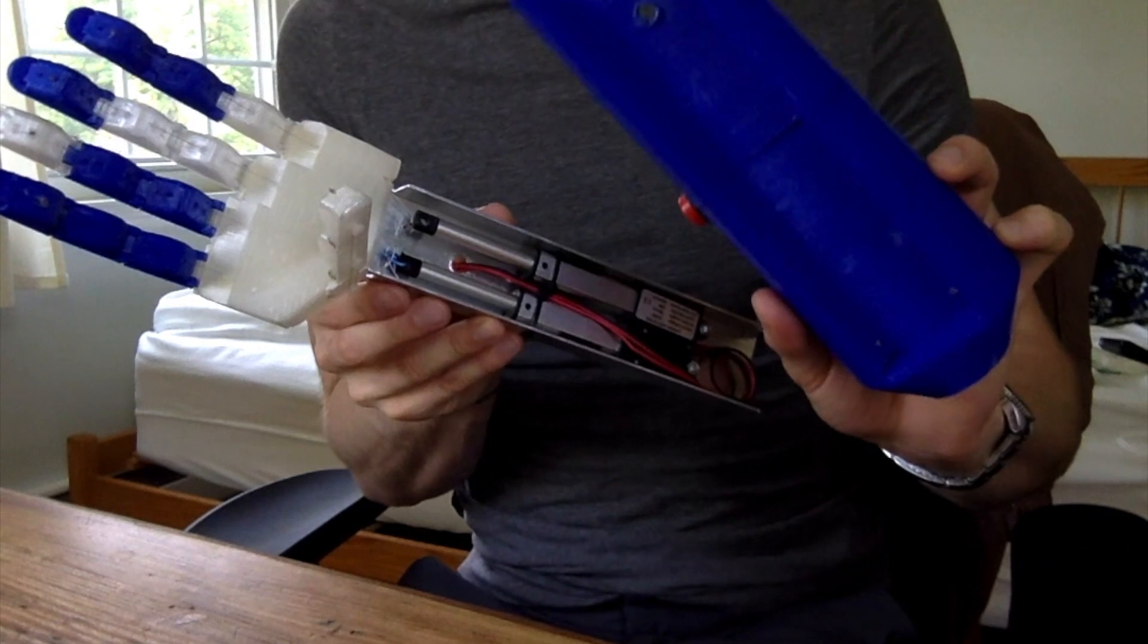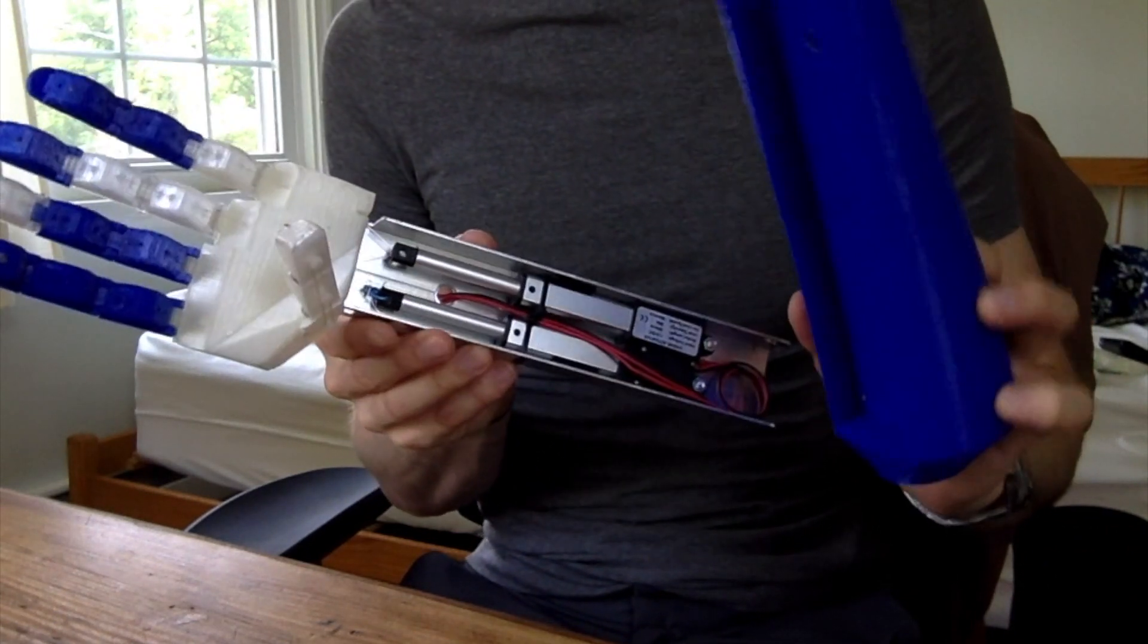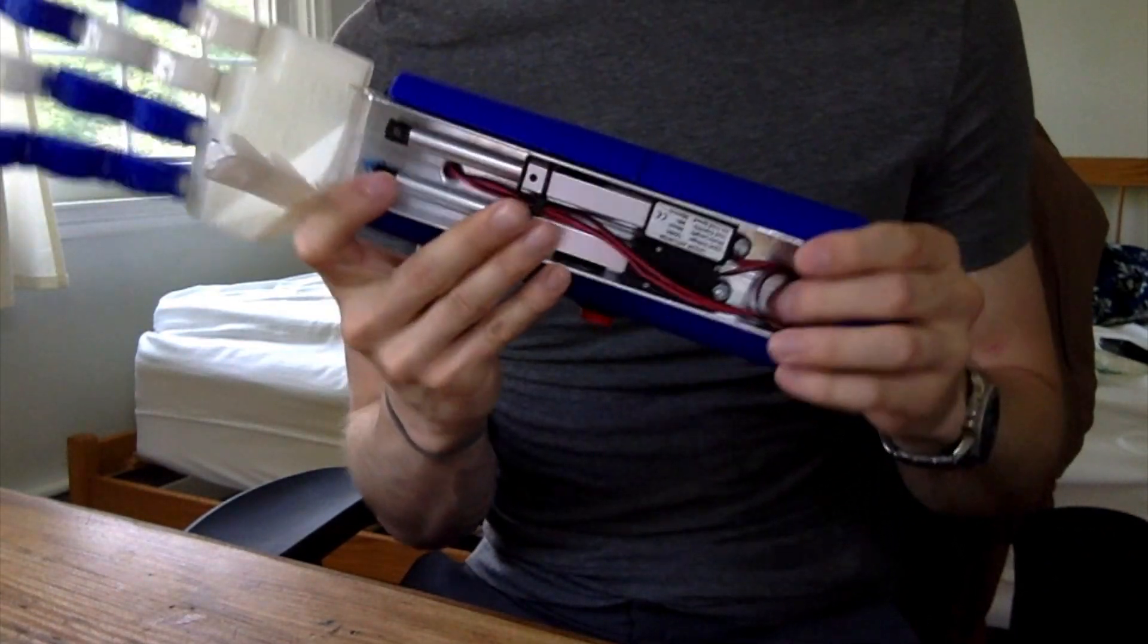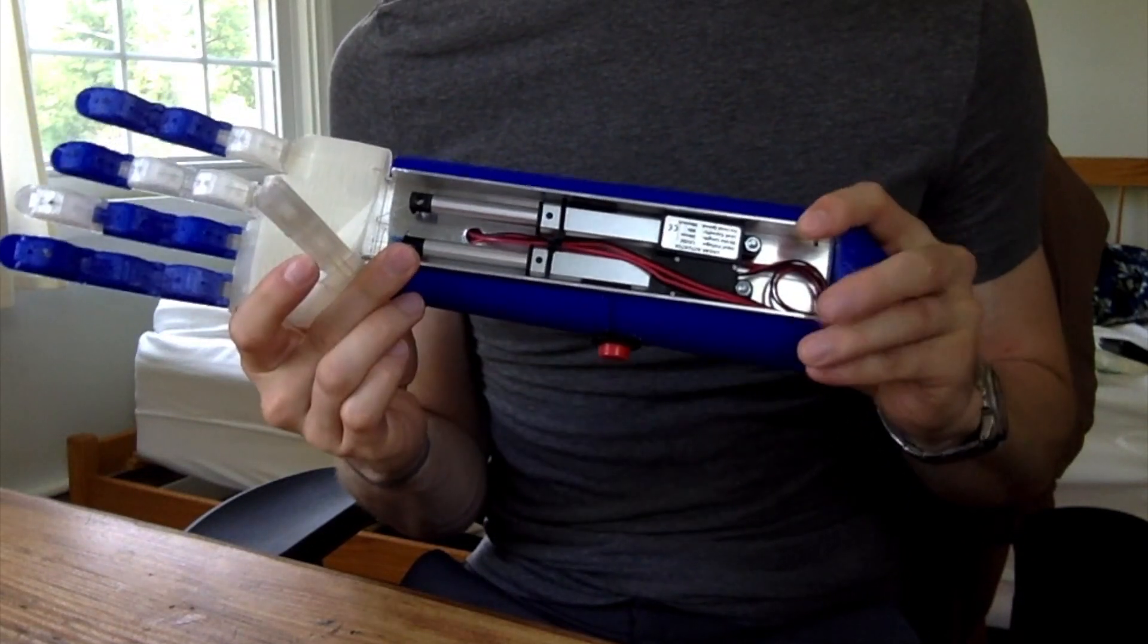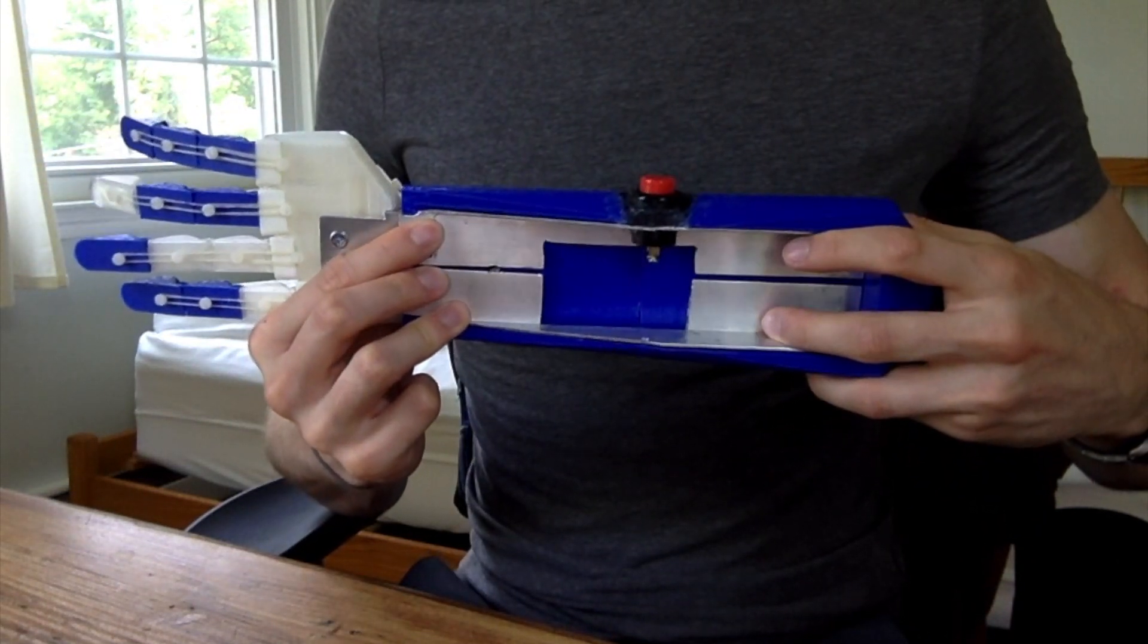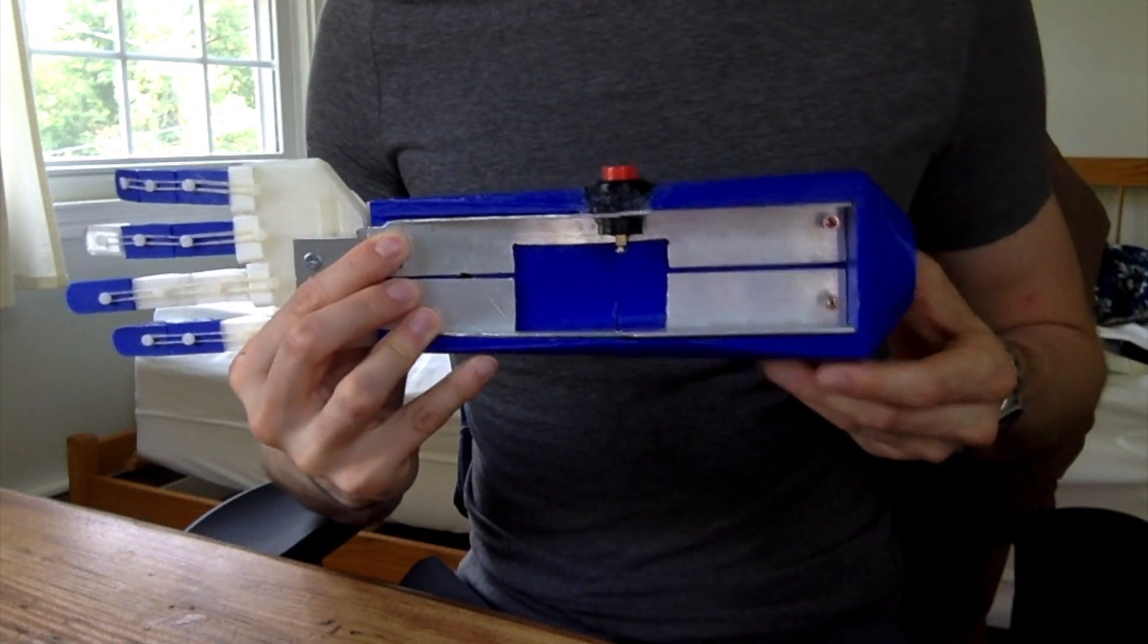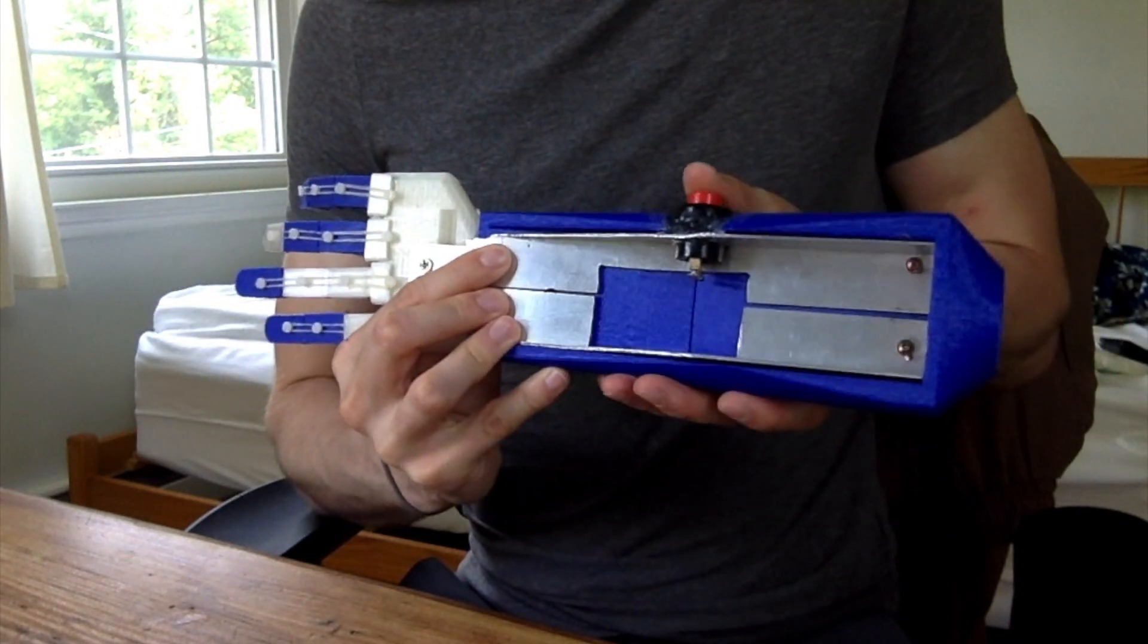The housing is going to form the forearm of this prosthesis. I 3D printed this structure, which fits onto the system we already have. The back has space for the battery and electronics. I already added some aluminum extrusions for support, as well as a push button to open and close the hand manually when the muscle sensor isn't attached.